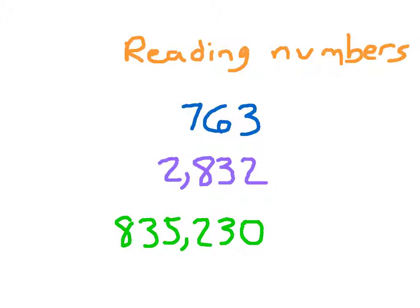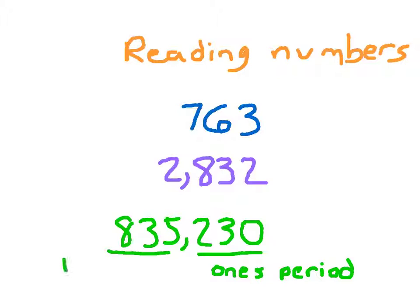What I mean by that is that these three digits — the 8, the 3, and the 5 — are in what's called the thousands period, whereas the 2, 3, and 0 are in what's called the ones period. By reading those groups and numbers in each period, we can read larger numbers. We concentrate on the 835, just as we read 763 before. And for this comma here, this is now in the thousands period, so we say 835,000, and then we just say 230.